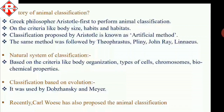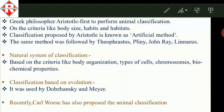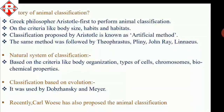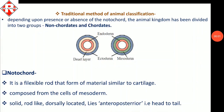The classification based on evolution was proposed by certain scientists, and more recently further animal classifications have been proposed. Now we will see the traditional method of animal classification for the SSC board. This method is particularly dependent upon the presence or absence of notochord. If notochord is present, the animal will be a chordate; if absent, it will be a non-chordate.